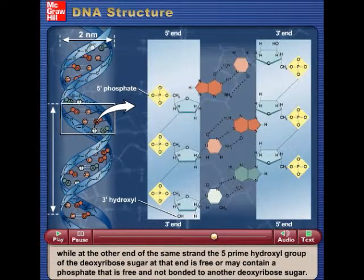While at the other end of the same strand, the five-prime hydroxyl group of the deoxyribose sugar at the end is free or may contain a phosphate that is free and not bonded to another deoxyribose sugar.